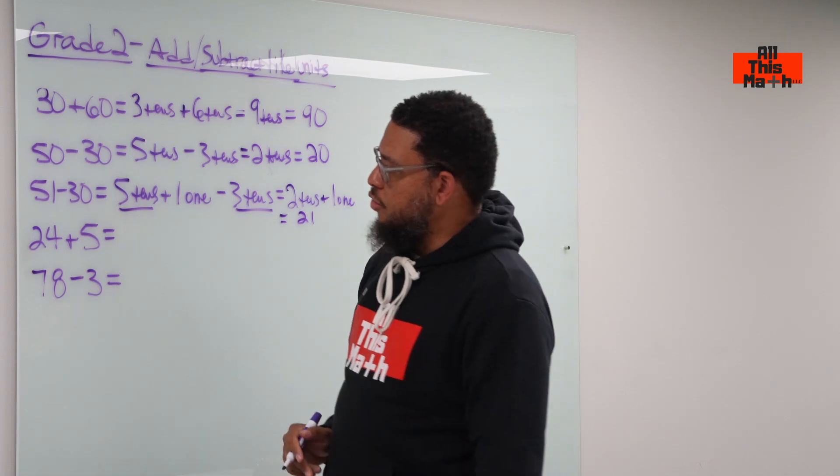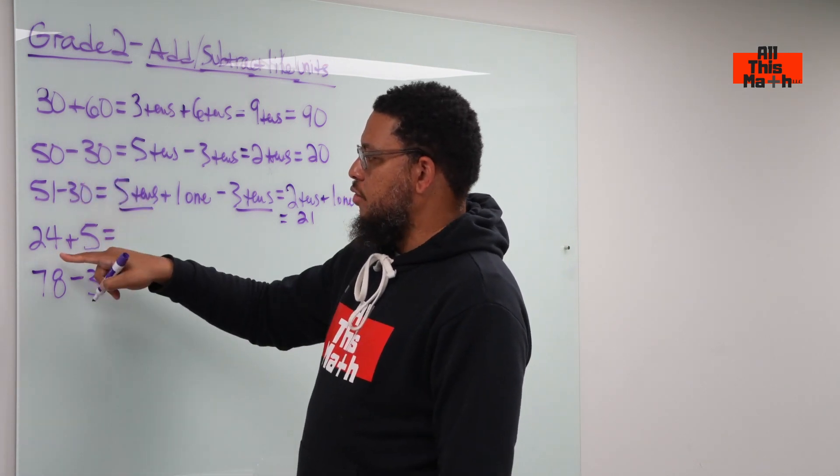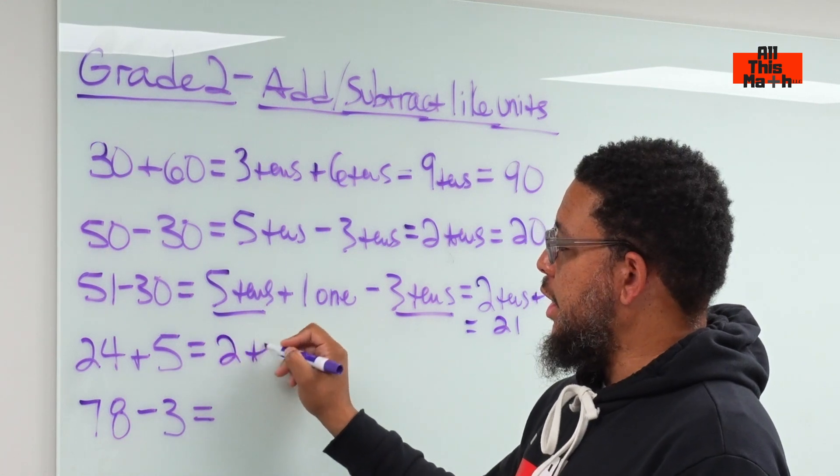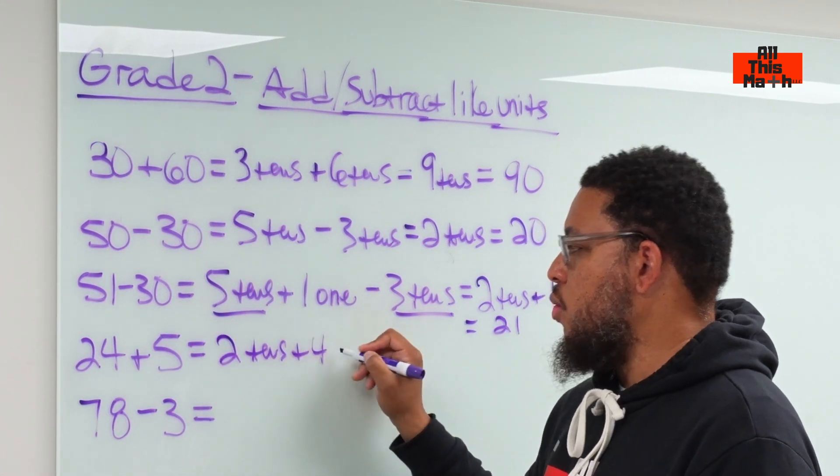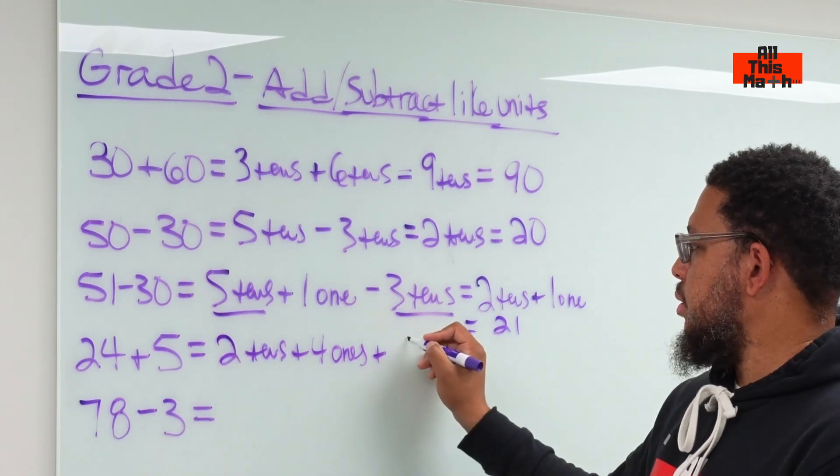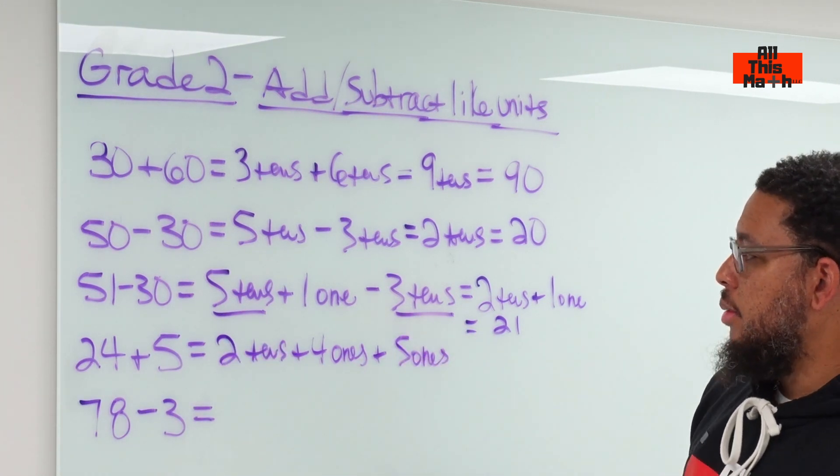Then we go down here, 24 plus 5—similar to the previous example. We have a non-zero digit in the ones place. So 24 can be written as two tens and four ones plus five ones.